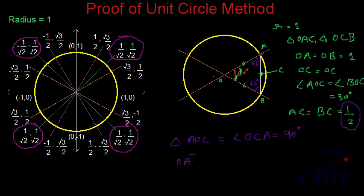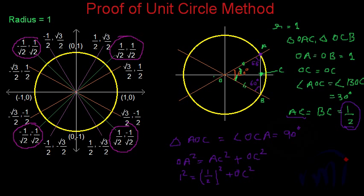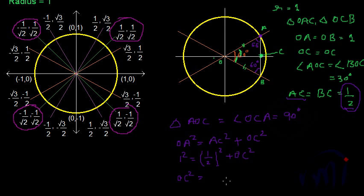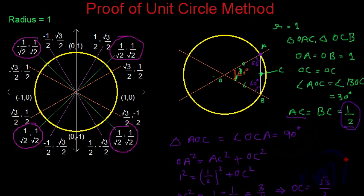So OA² = AC² + OC². The value of AC is 1/2 and OA is 1, so 1² = (1/2)² + OC², giving OC² = 1 − 1/4 = 3/4, and therefore OC = √3/2. So the x-coordinate of point A is √3/2 and the y-coordinate is 1/2. The coordinate of point A is (√3/2, 1/2), which is exactly the value obtained using the unit circle method.